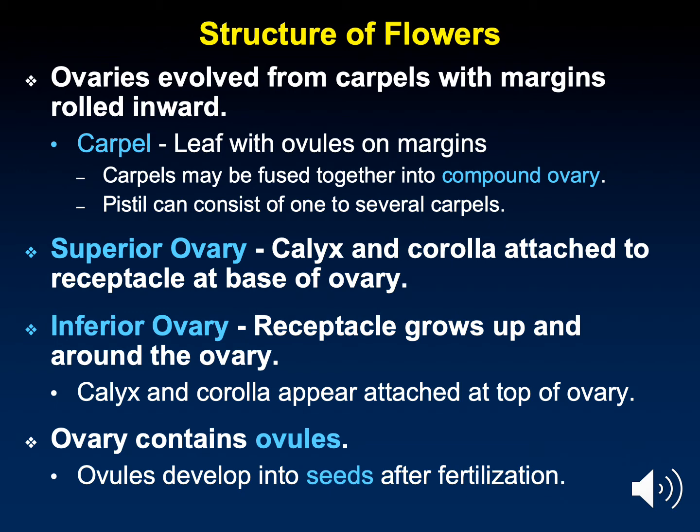Plants, depending on the species, can have multiple carpels. A single carpel could have multiple ovules, or several carpels could each have their own ovule. Each scenario gives rise to a different type of fruit.